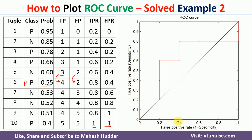Starting with the x-axis as false positive rate: when FPR is 0, TPR is 0.2 — that is the first point. When FPR is 0.2, TPR is 0.2 — the second point. Next, FPR is 0.2 and TPR is 0.4. Then FPR is 0.2 and TPR is 0.6. Then FPR is 0.4 and TPR is 0.6. Then FPR is 0.4 and TPR is 0.8. Then FPR is 0.6 and TPR is 0.8. Then FPR is 0.8 and TPR is 0.8. Then FPR is 1 and TPR is 0.8. Finally, FPR is 1 and TPR is 1.